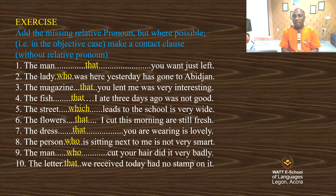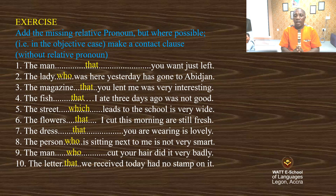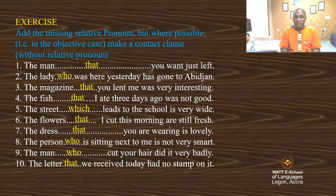Let's look at the second example: 'The lady who was here.' After the noun we have a verb, so it means we need to use the pronoun 'who' — not 'that' or 'which.' Now let's look at number five: 'The street which leads.' Here we are trying to emphasize one particular street, so we bring in 'which' for you to know that it is this particular street we are talking about.